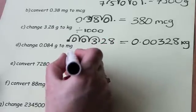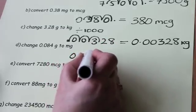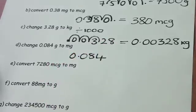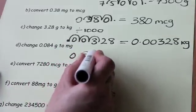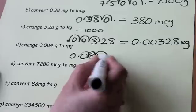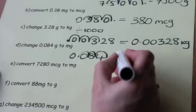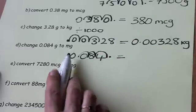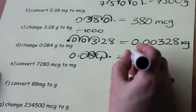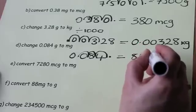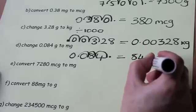So 0.084. I'm multiplying and so I'm moving three places to the right. One, two, three. The decimal point is now here. And now you can see that I don't need these two zeros at the beginning. And so my answer is simply 84 milligrams.